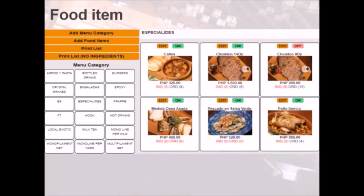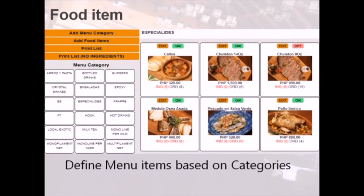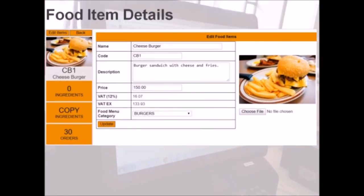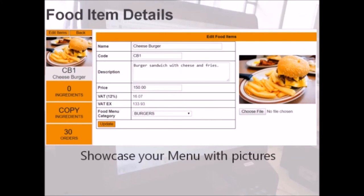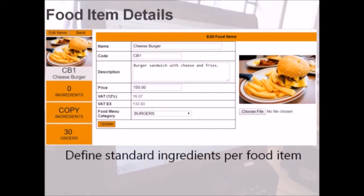Here's the food item interface. The menu is defined based on the categories. When a category is clicked on the left corner, all food items under that category will be displayed on the right. As you add new food items and categories, define their details here. You can showcase your food items with images.